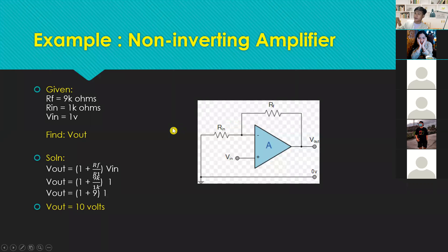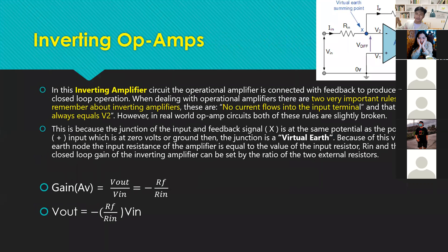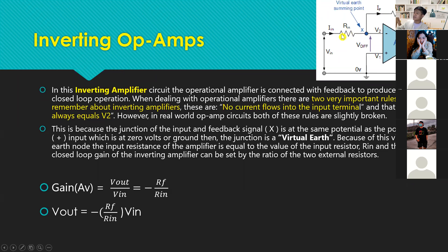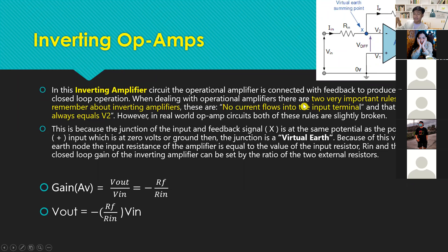Moving on, if we have non-inverting, we also have an inverting amplifier. In the inverting amplifier circuit, the operational amplifier is connected with feedback to produce a closed-loop operation — same as before. When dealing with inverting amplifiers, there are two very important rules. These rules apply specifically to inverting amplifiers and differential amplifiers.